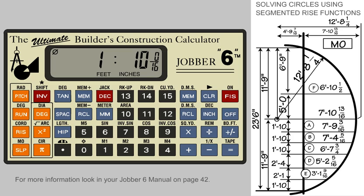With this complete, we need to activate the segmented rise function by pressing the invert key, followed by the segmented rise function key. The first dimension that is automatically displayed is the MO or middle ordinate, being on the center line of the arc.